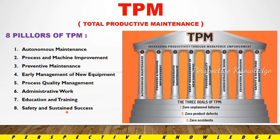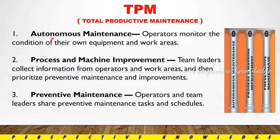The 8 pillars are: autonomous maintenance, process and machine improvement, preventive maintenance, early management of new equipment, process quality management, administrative work, education and training, and safety and sustained success. One of the main pillars is autonomous maintenance — operators monitor the condition of their own equipment and work areas, then prioritize preventive maintenance and improvement.